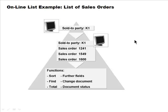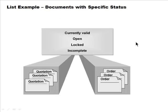Examples of online lists include: list of orders by a particular customer, list of orders in a particular region, list of orders during a particular time period, or documents with a specific status — quotations which are still active, expired quotations, orders which have not been shipped. Statuses include valid, open, locked, incomplete, and so on.